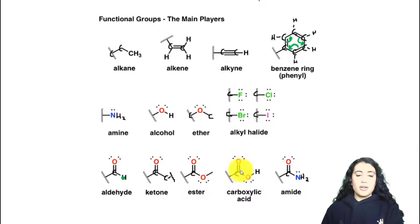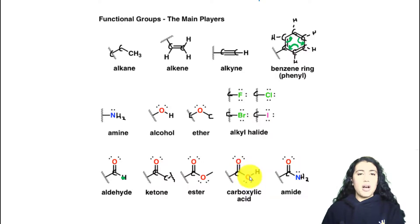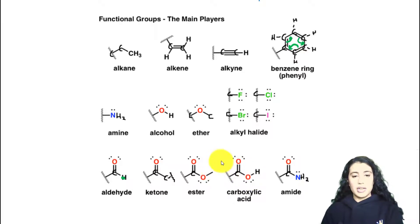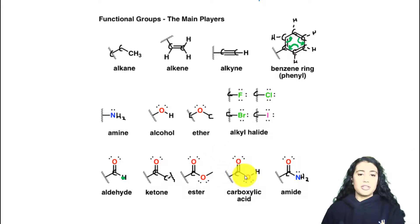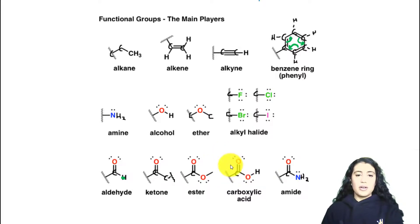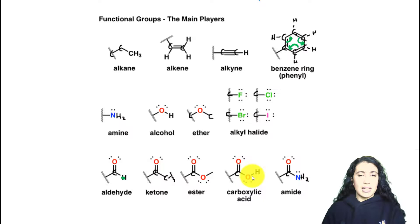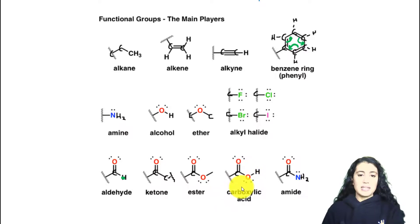An ester is specifically when that carbonyl carbon is also bound to an oxygen atom. Then there's the carboxylic acid, which is pretty similar but occurs on the end of the chain, and the oxygen instead of being bound to a carbon — where the chain can continue — is bound to a hydrogen.